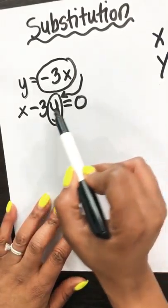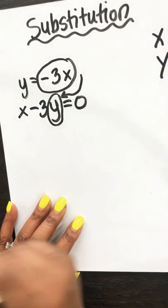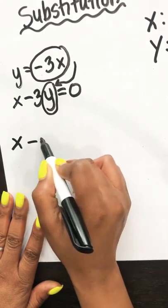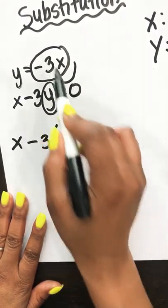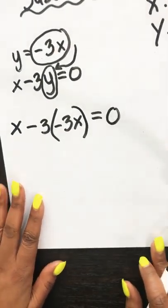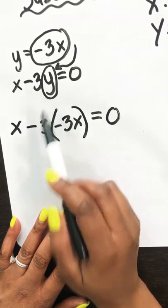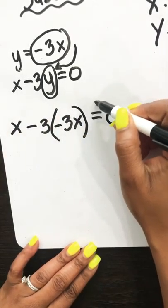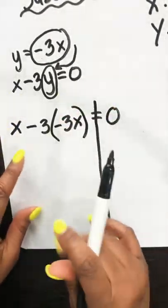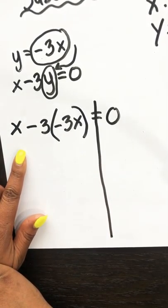What I mean is when I rewrite this equation, where I see a y, I'm going to put negative 3x there. So it would look like this: x minus 3 times negative 3x equals 0. I've taken negative 3x and substituted it for y. Now because I have an x and an x instead of an x and a y, I can combine like terms and solve as usual.